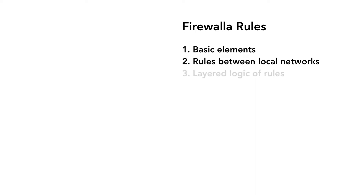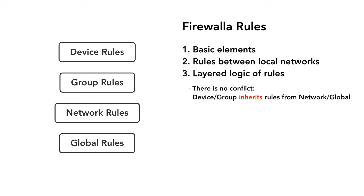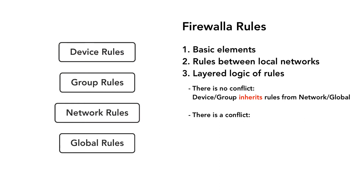Let's look at how rules relate to each other. When we have multiple rules defined and there is no conflict, a device inherits from its network rules and global rules. For example, if a network has a rule to block all games, and there are no other rules to allow at the device level, then all devices in that network will have games blocked.